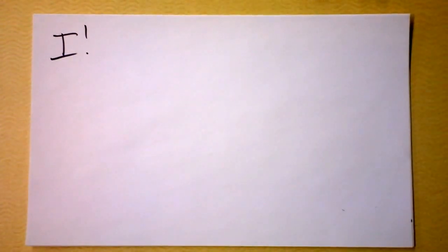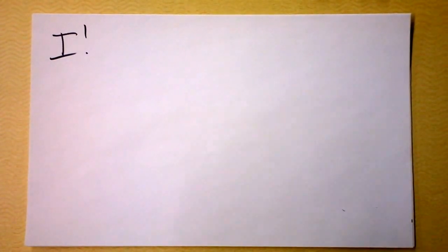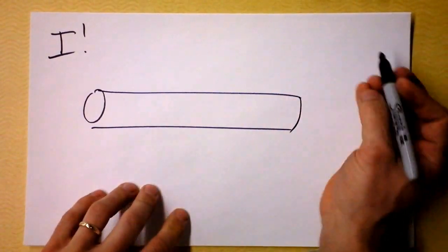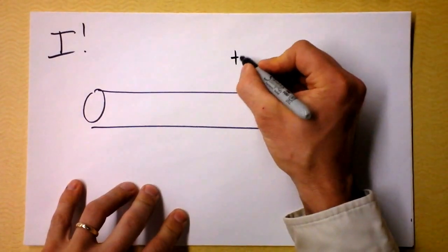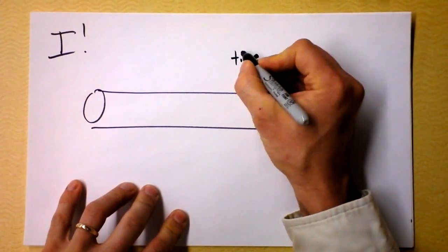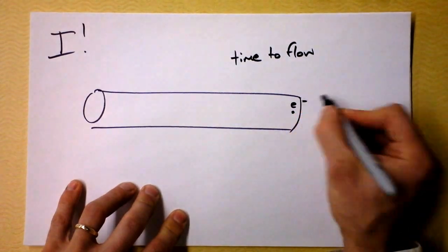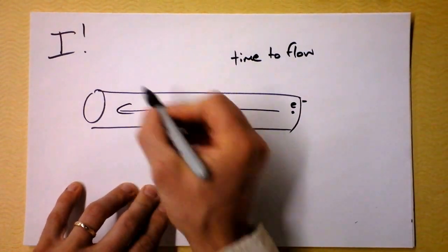So what I'm talking about is making a current go through a wire. And let's get ourselves a wire. And well, how long time to flow?